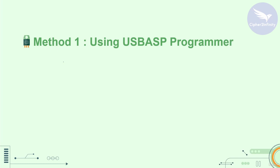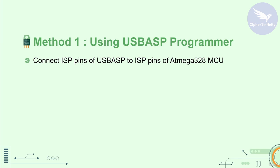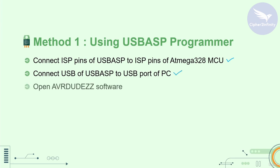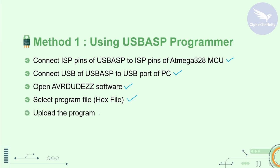Whenever we have to program the bootloader in the microcontroller, we follow method one which is using the USB ASP programmer. We need to connect the ISP pins of USB ASP to the ISP pins of the Atmega328 microcontroller, and then connect the USB side of USB ASP to the USB port of the PC. Then we open the AVRDUDE software, select the program file or hex file, and upload it to the microcontroller.